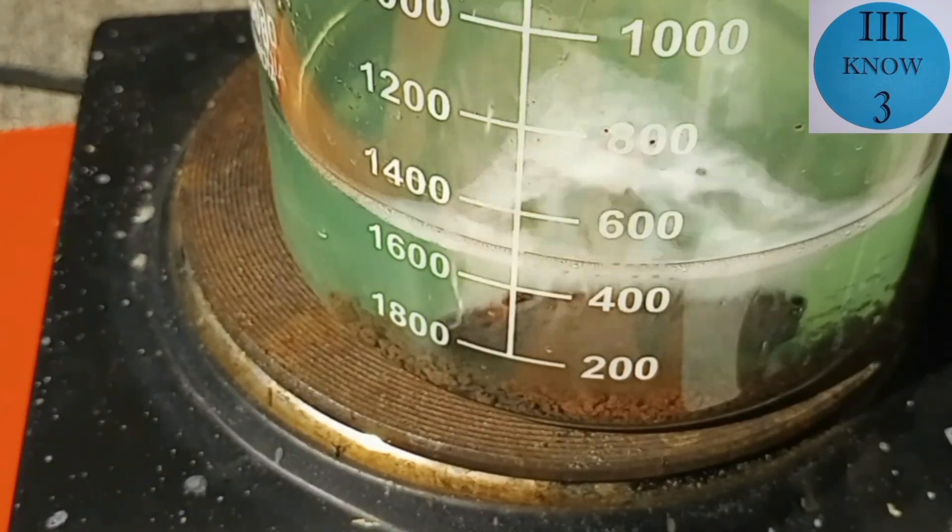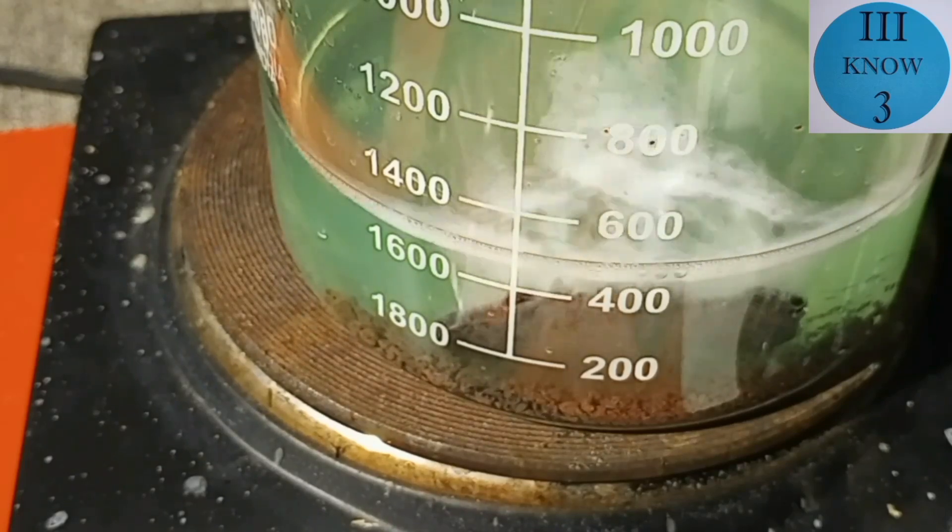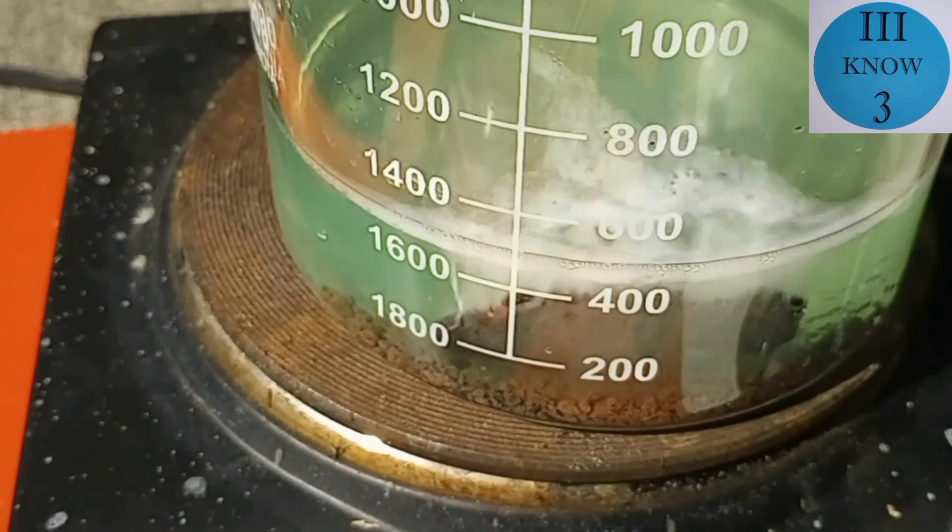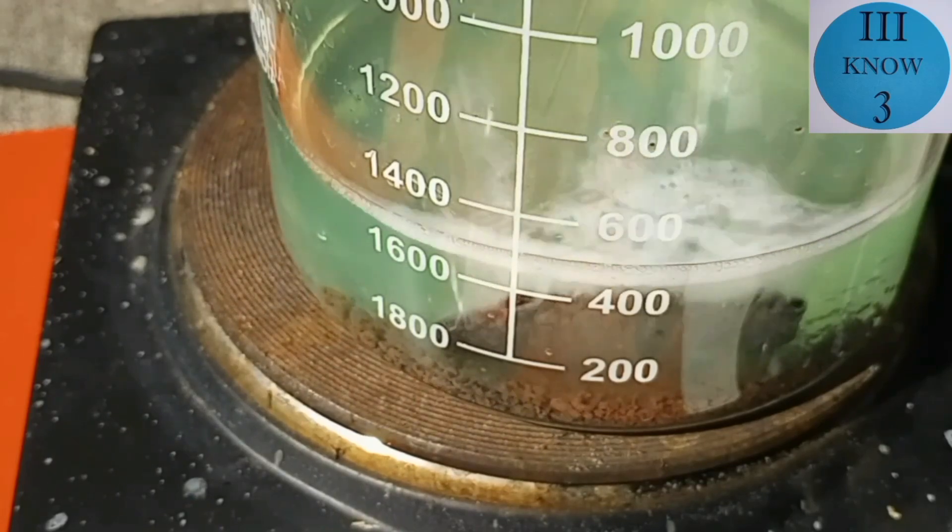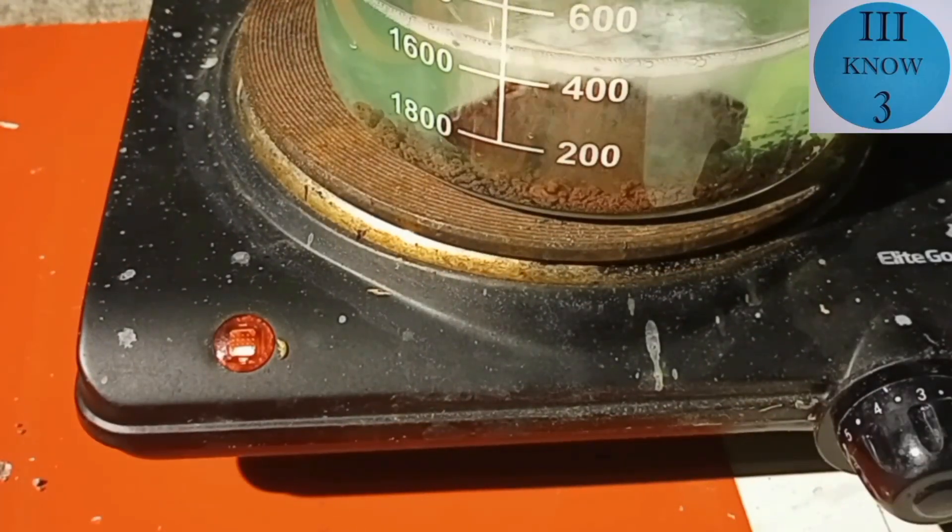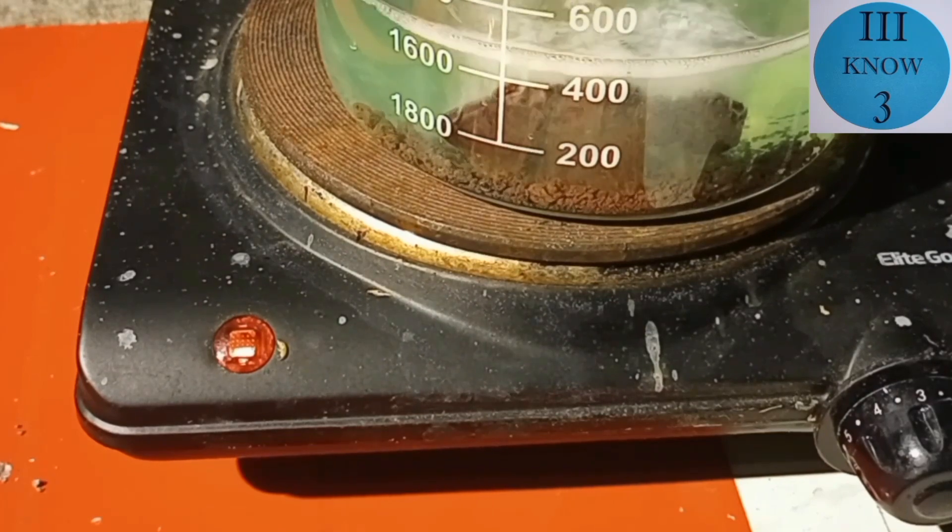Now this is interesting because there's all these little balls of copper. The solution has turned a light green so it looks like nickel acetate and the big piece of zinc is very black.